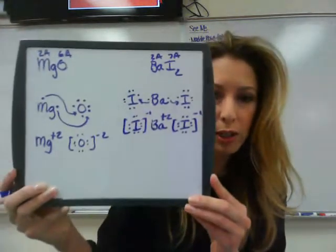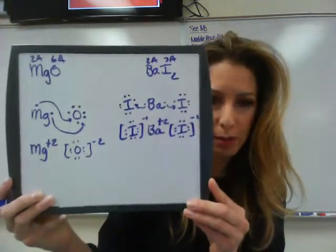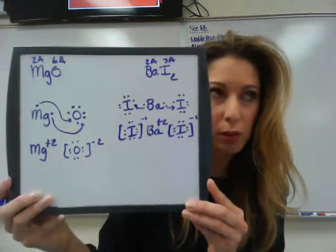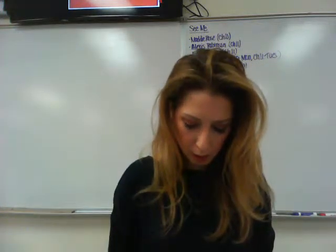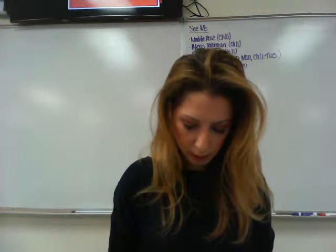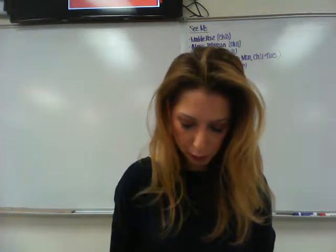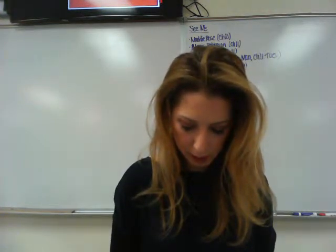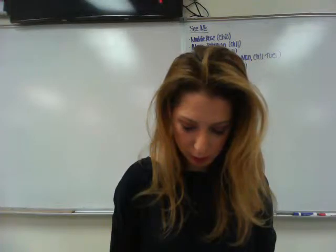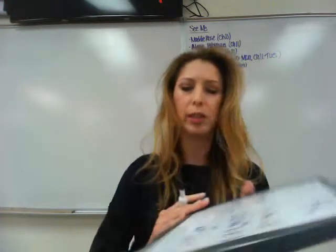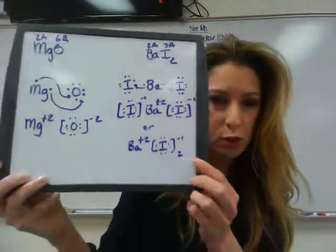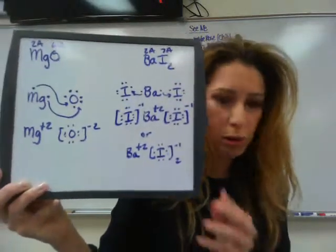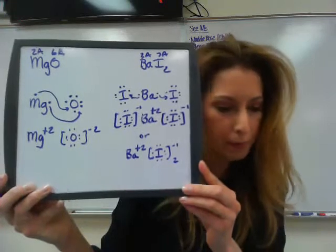Instead of drawing multiple ions on paper, I will also accept if you just write Ba2+ and then an iodine with eight dots and a negative one on the outside and a little subscript two to indicate that you have two of them. The choice is yours — both are totally fine.